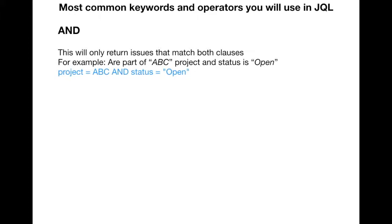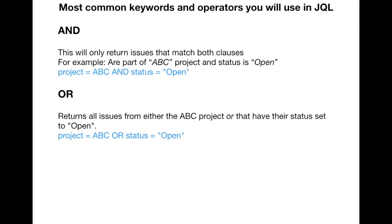The second keyword is OR. OR returns all issues from either the first search query or the second, whichever criteria is met. If one of the two criterias is met, it will return results from both. For example, project = ABC OR status = open will list all issues in project ABC and all open issues from all other projects — it's a broader search.